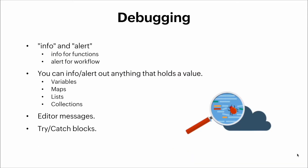Now let's talk about debugging. We have different tools given to us by Deluge to help us debug or find errors within our code. We get the info and alert features — info is used within functions and alerts are used within workflows. You can info and alert out anything that holds a value, including variables, maps, lists, or collections. Besides info and alert, we also get editor messages and the try-catch blocks. Let's go into detail and actually do some debugging so you can see how these tools get applied.